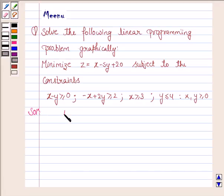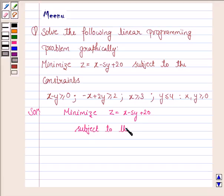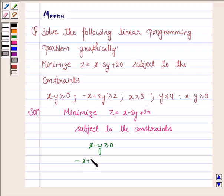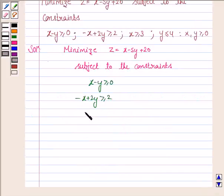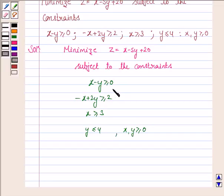We have to minimize z equal to x minus 5y plus 20, subject to the constraints: x minus y greater than or equal to 0, minus x plus 2y greater than or equal to 2, x greater than or equal to 3, y less than or equal to 4, and x and y are greater than or equal to 0. The first step towards solving this linear programming problem is to draw the lines corresponding to the constraints.